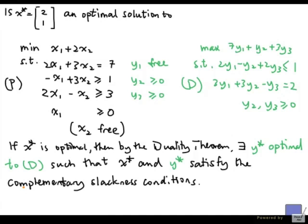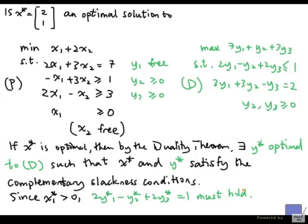So since x1 star greater than 0, we must have this must hold. That means that y star has to satisfy this equation as well as the second constraint from D. And we'll try to solve that and see what happens. That's just a system of equations.